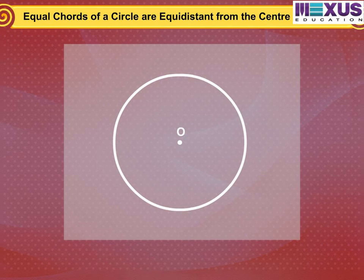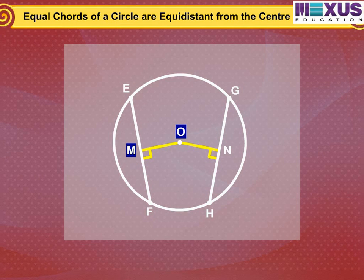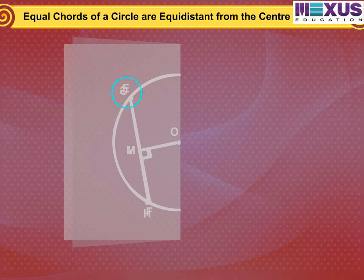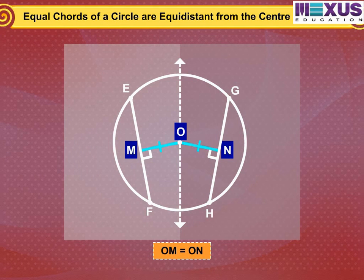Draw a circle of any radius on a tracing paper. Draw two equal chords EF and GH, and also the perpendiculars OM and ON on them from the center O. Fold the figure so that H falls on F and G falls on E. You may observe that O lies on the crease and N falls on M. Therefore OM is equal to ON.